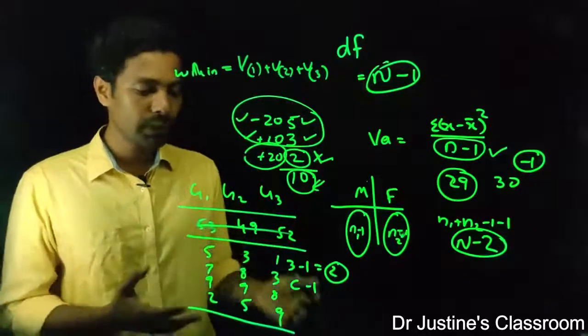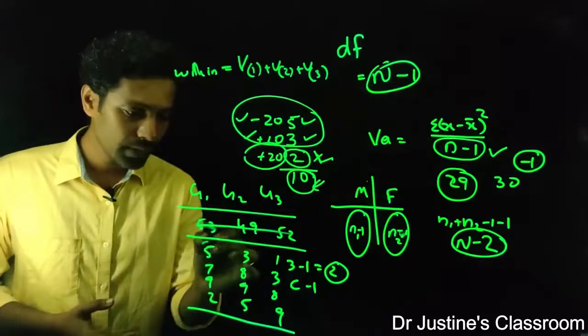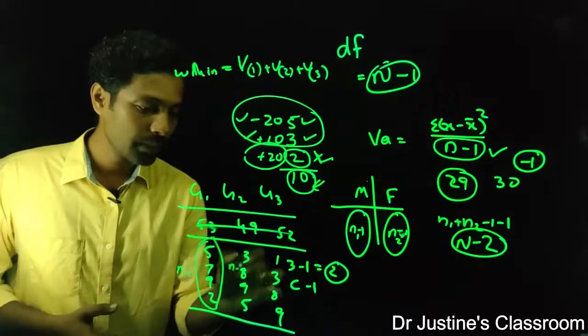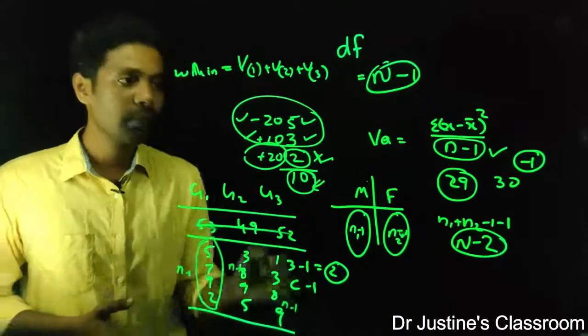So how do you do this? What's the variance here and what's the degree of freedom here? It's n minus 1, n minus 1, and n minus 1.